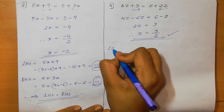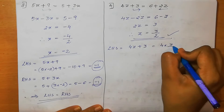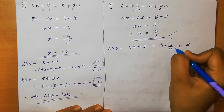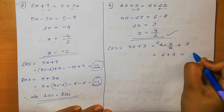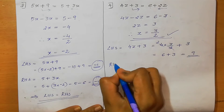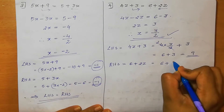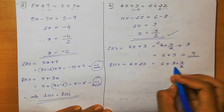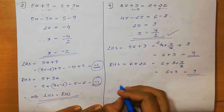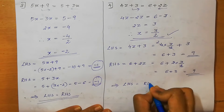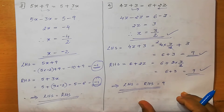We verify: LHS = 4z + 3 = 4 × (3/2) + 3. The 2 cancels giving 2 × 3 = 6, so 6 + 3 = 9. RHS = 6 + 2z = 6 + 2 × (3/2) = 6 + 3 = 9. LHS = RHS = 9. Hence verified.